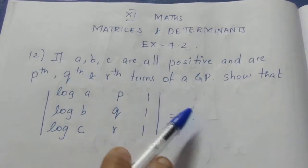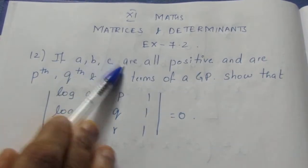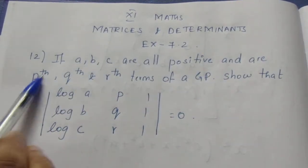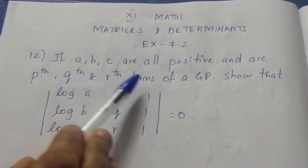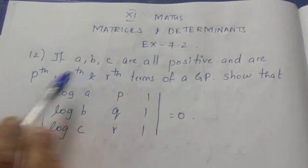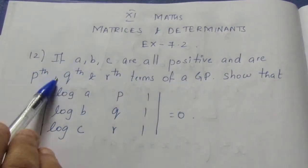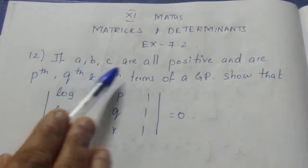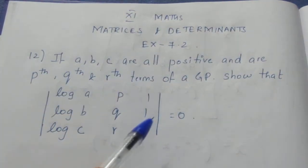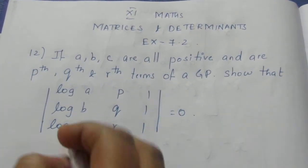Given that A, B, C are the Pth, Qth, and Rth terms of a GP respectively. So the Pth term is A, the Qth term is B, and the Rth term is C.